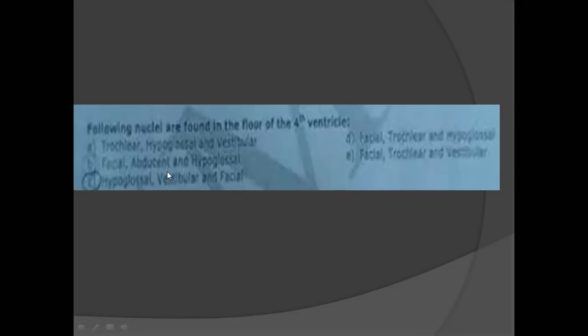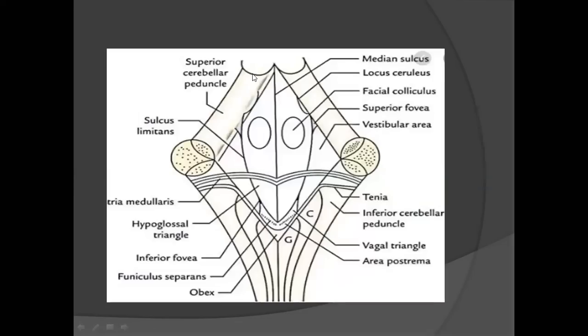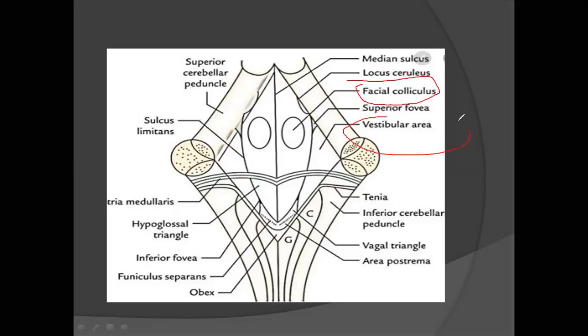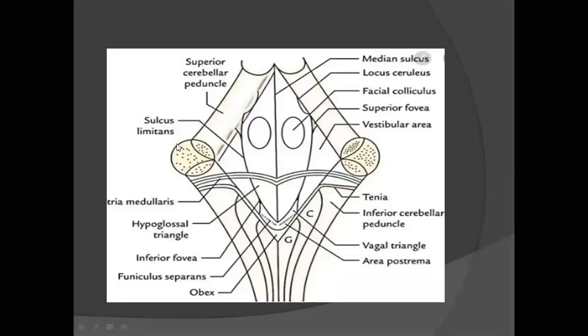Another important MCQ: which of the following nuclei are found in the floor of the fourth ventricle? The answer includes hypoglossal, vestibular, and facial nerves. Note that there is no abducent triangle or abducent area in the options — it covers the motor nerves of the facial nerve. In the floor of the fourth ventricle, there are four main nuclei present. You should know all four nuclei found in the floor of the fourth ventricle.